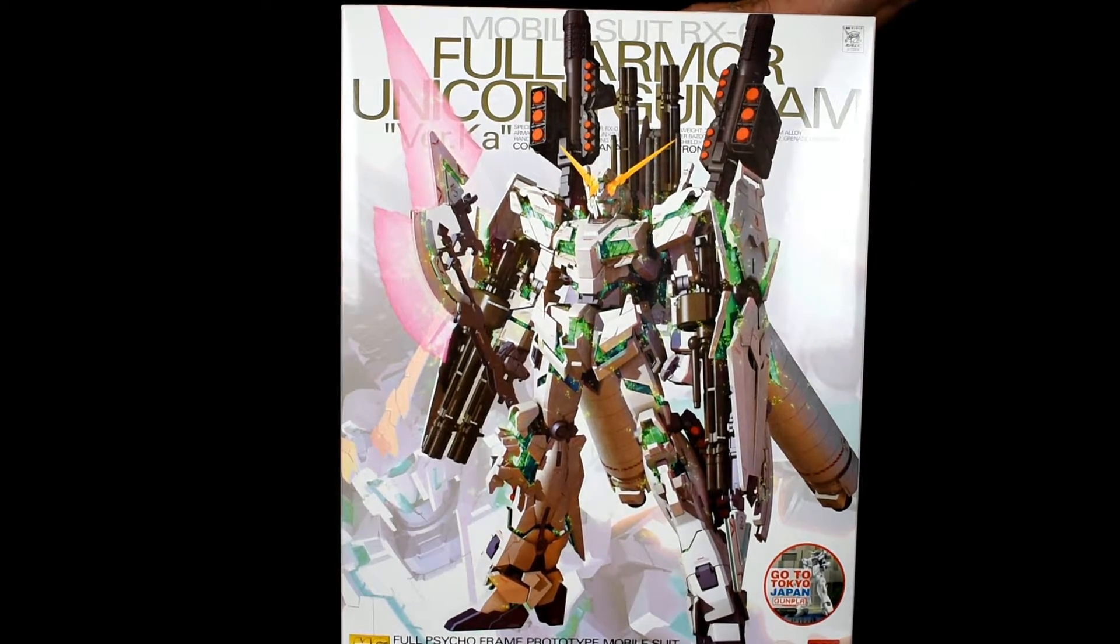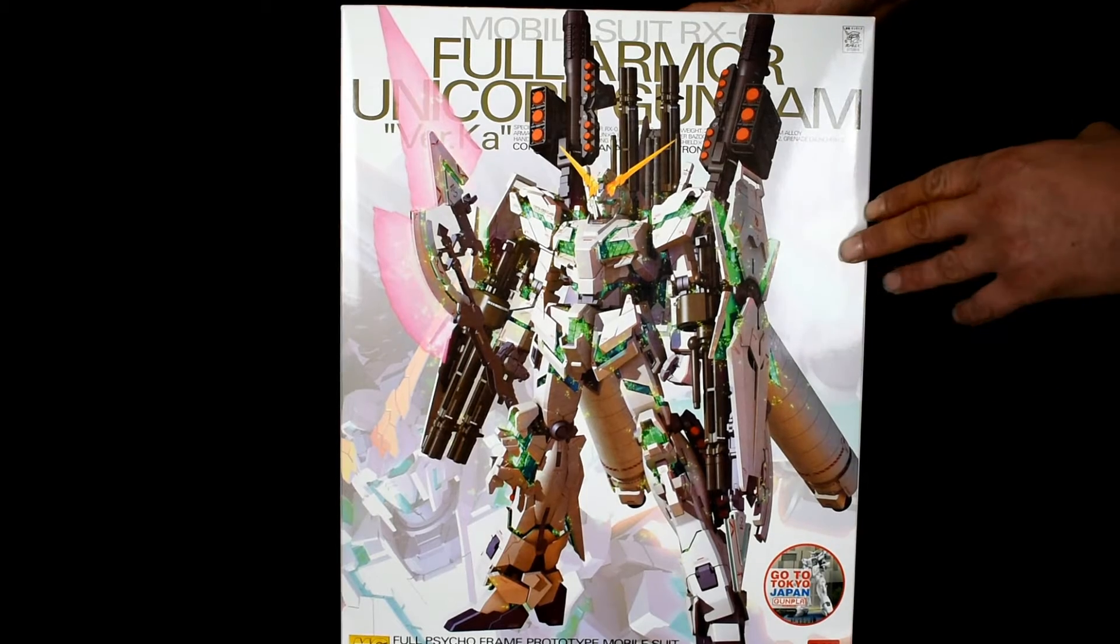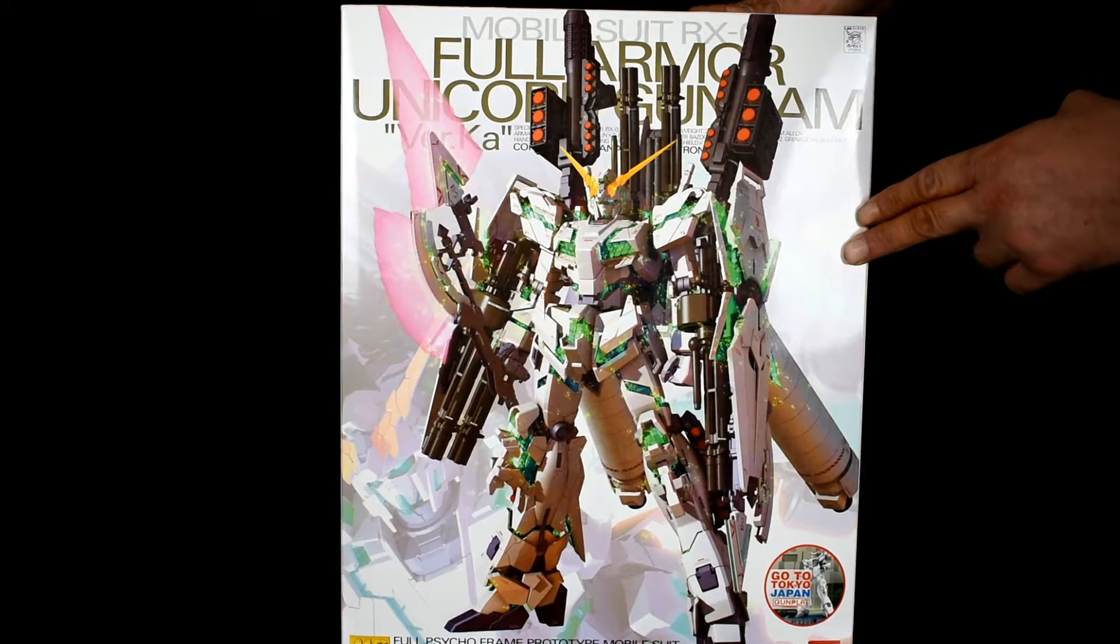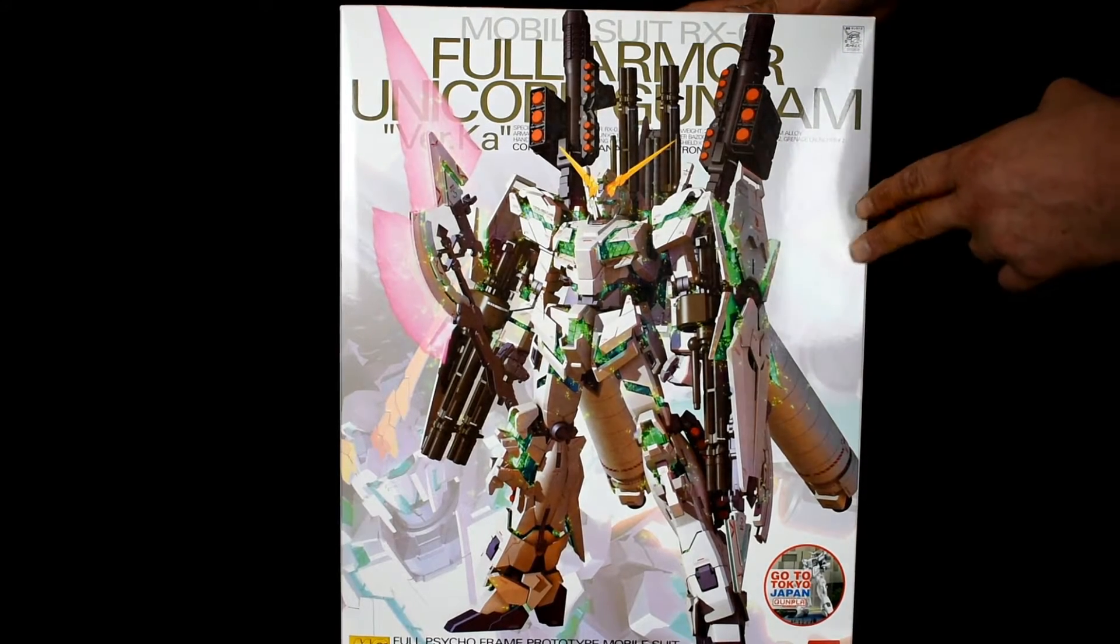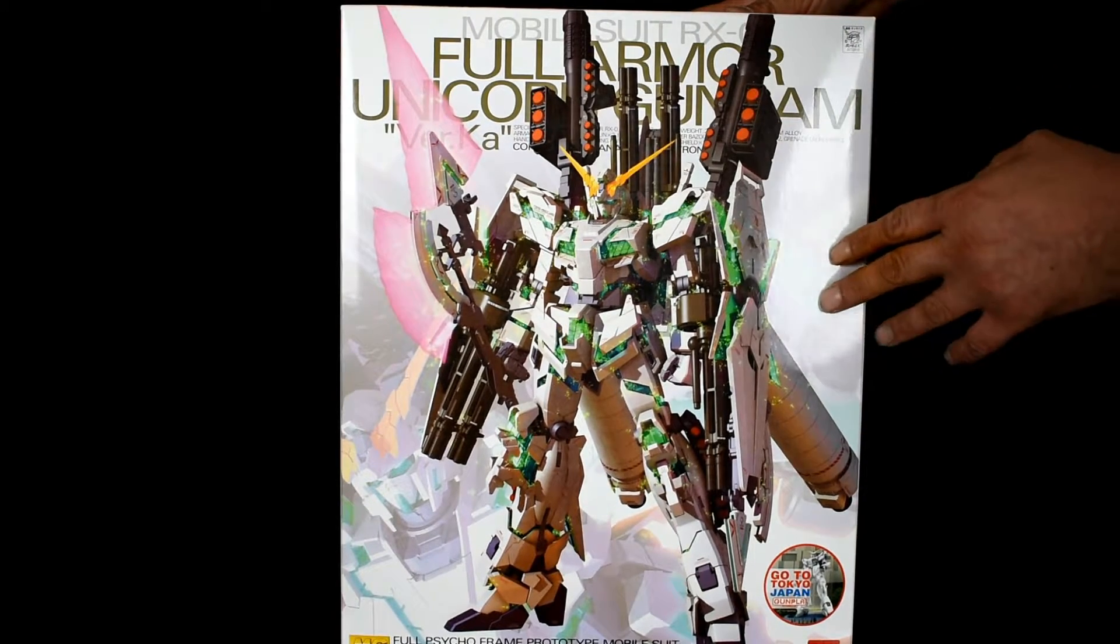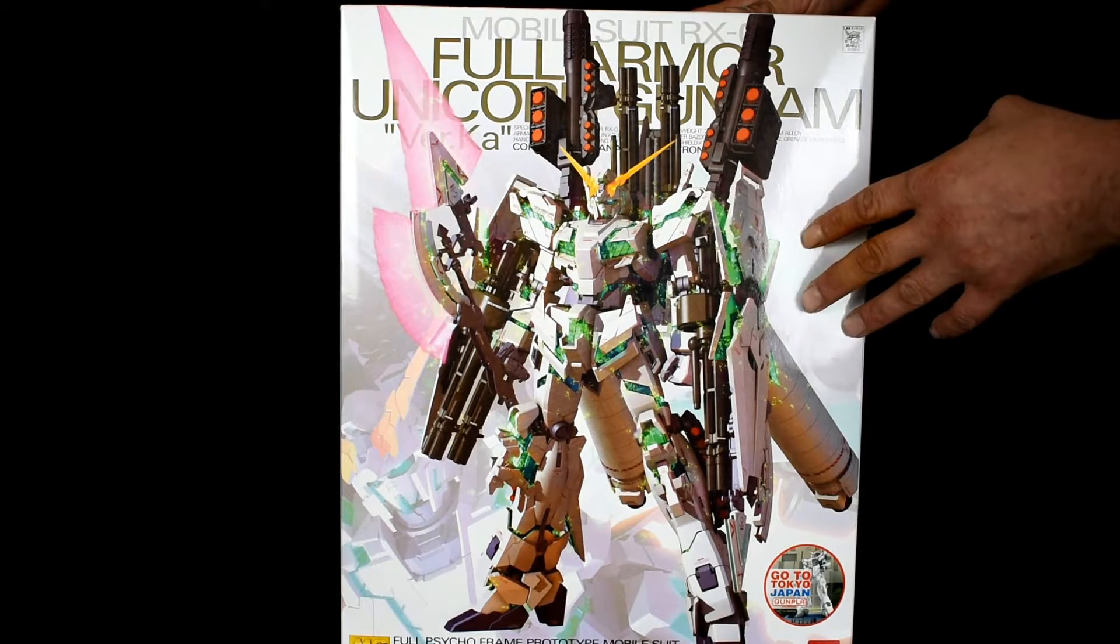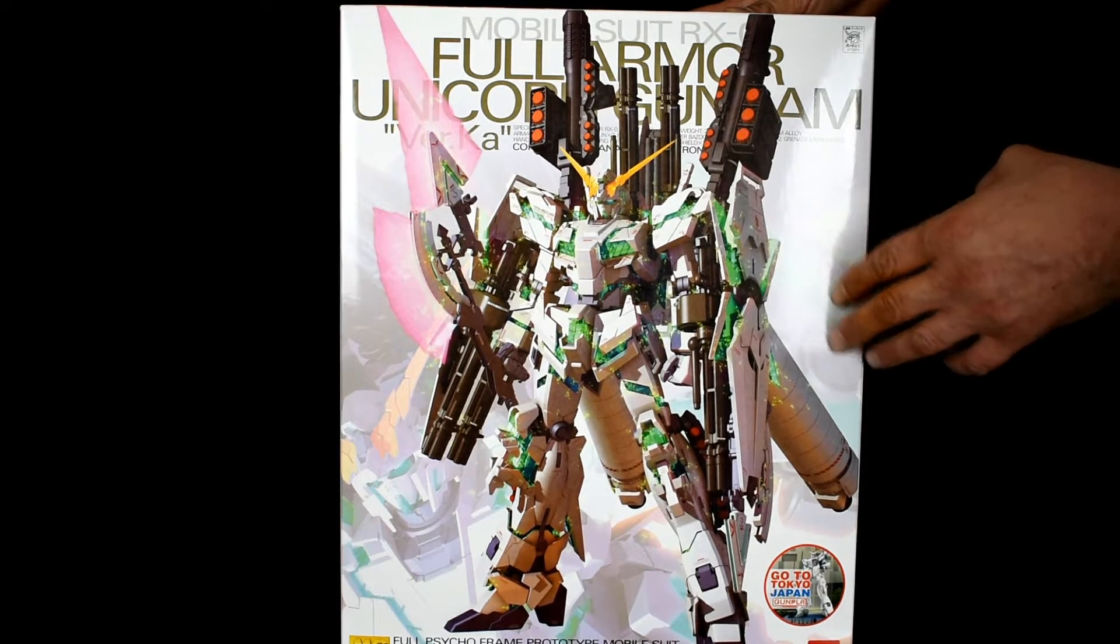Here we've got the mobile suit RXO Full Armored Unicorn Gundam in the final psycho frame colors. This one's the UK version, which is the Katoki Hajime model. On the front you can see it's got a nice illustration of the Unicorn in its green.